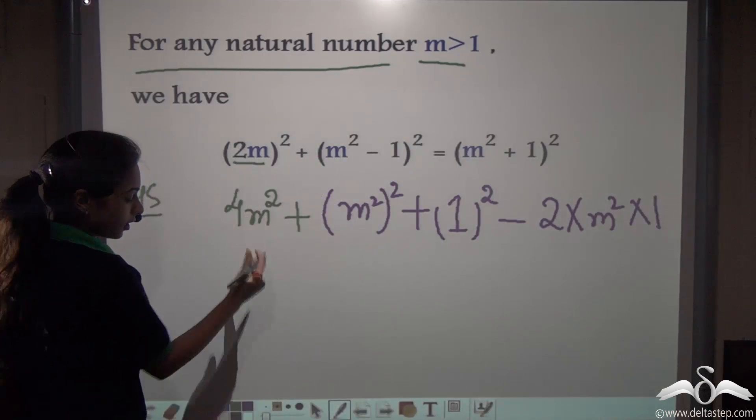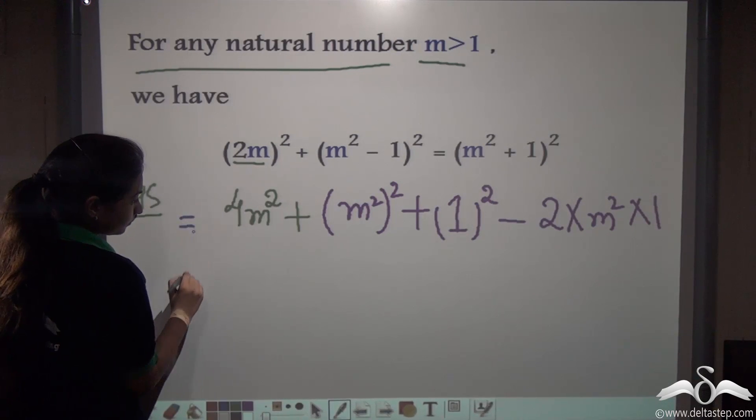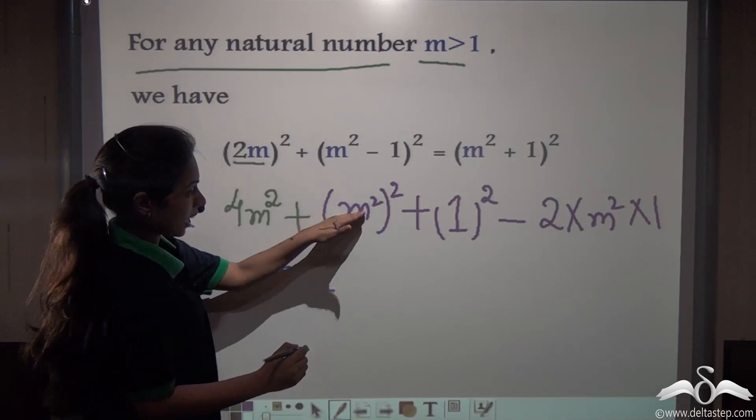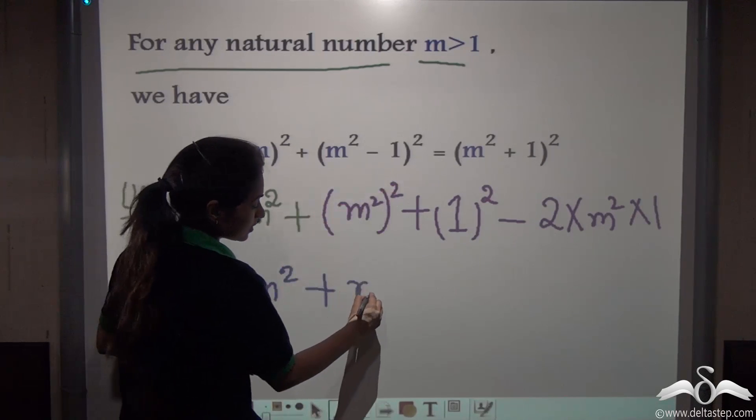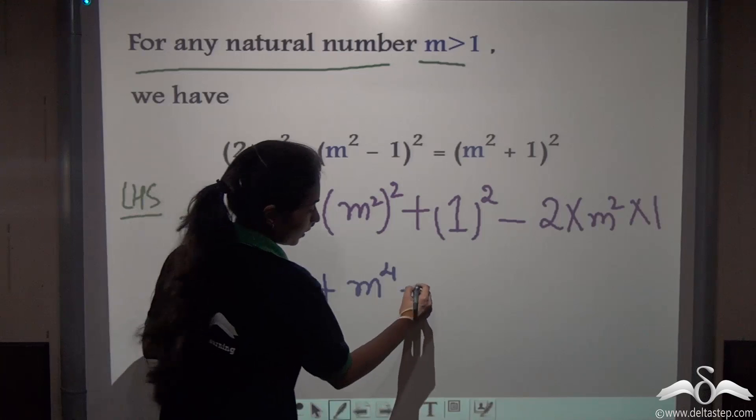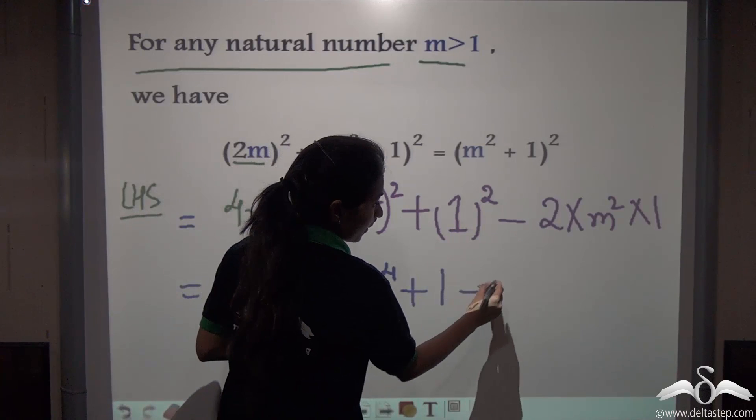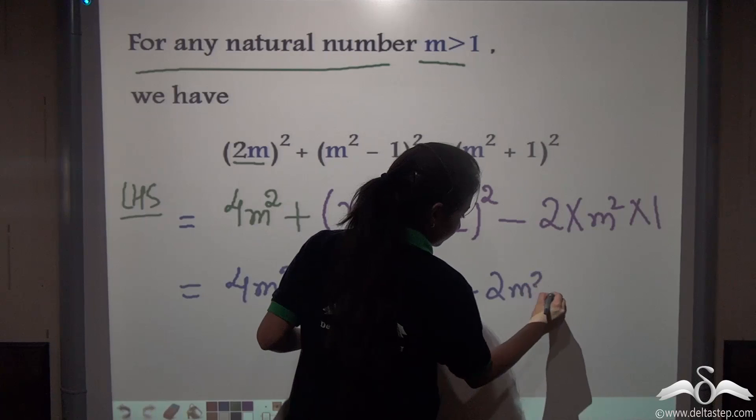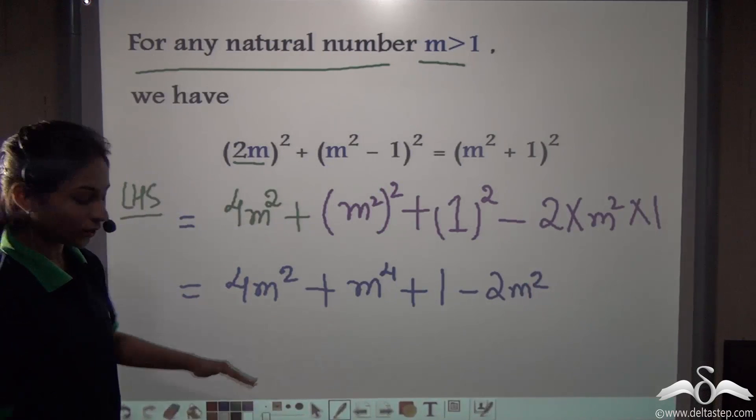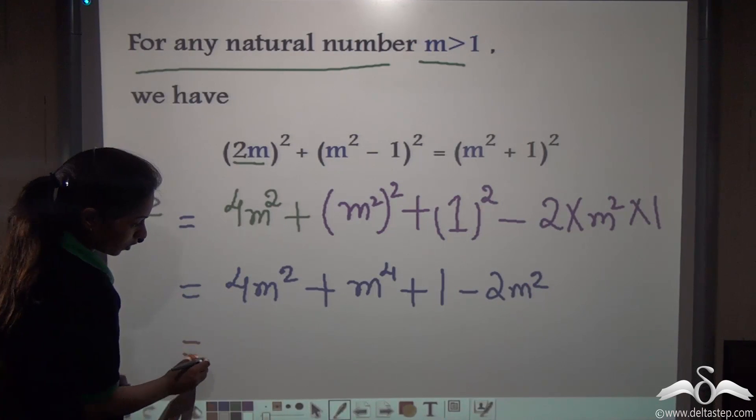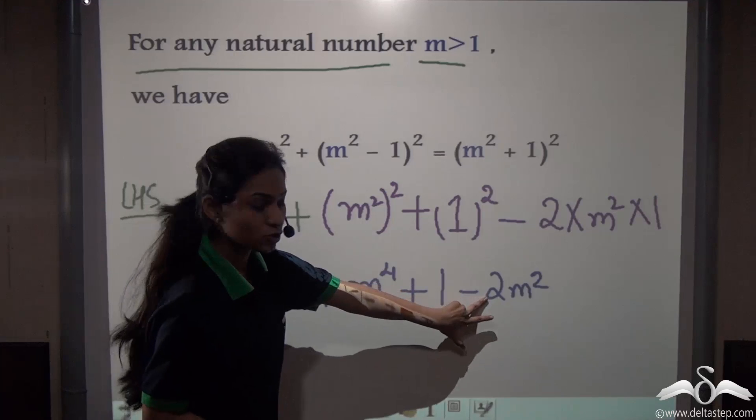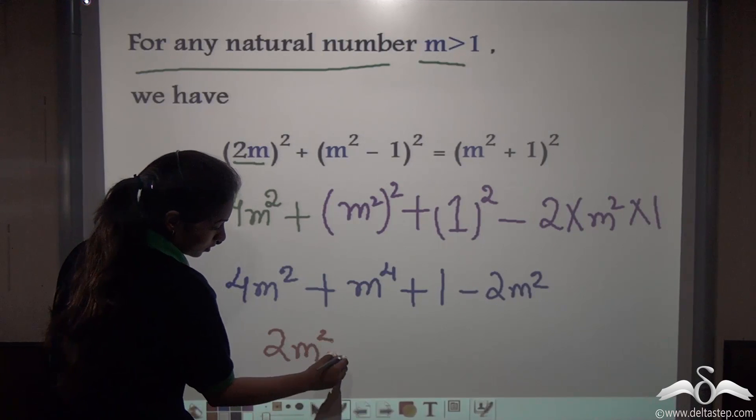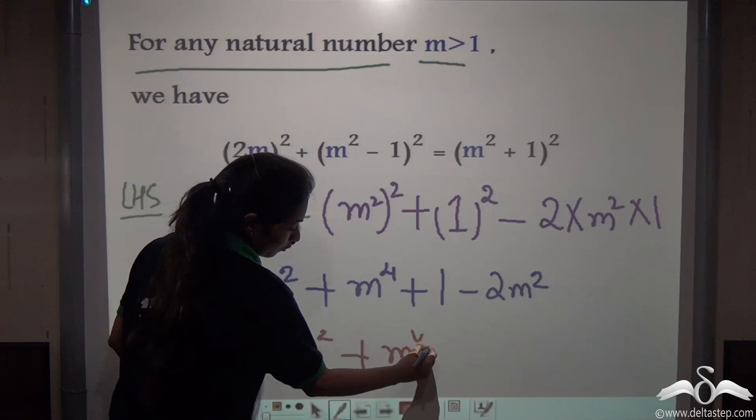So we expanded this. Now let us see what we get. m squared when squared gives us m to the power 4, plus 1 squared is 1, minus 2m squared into 1 gives us 2m squared. So what can I write from here?